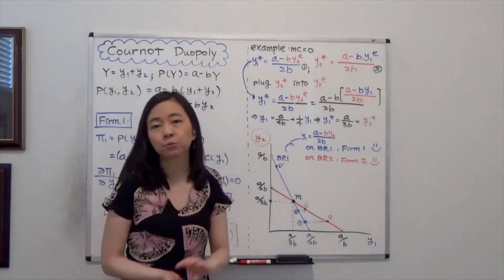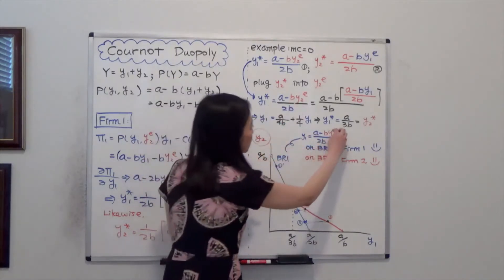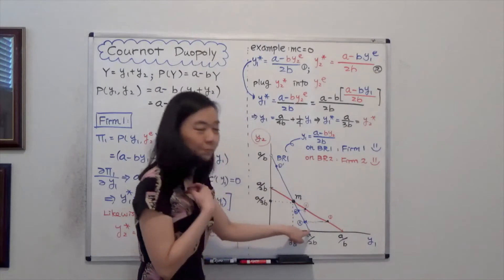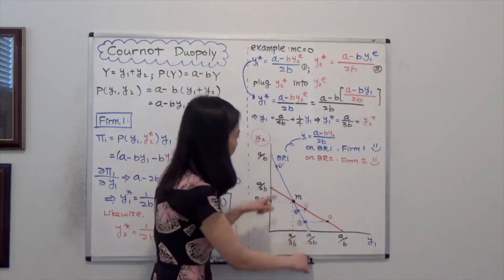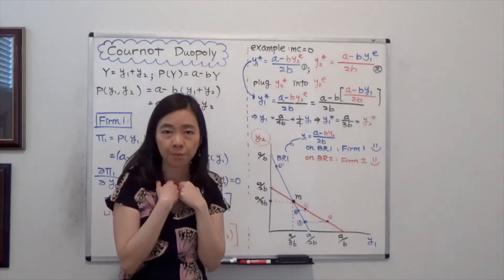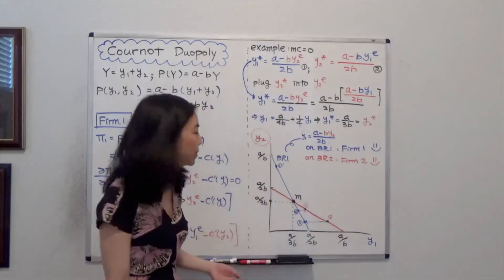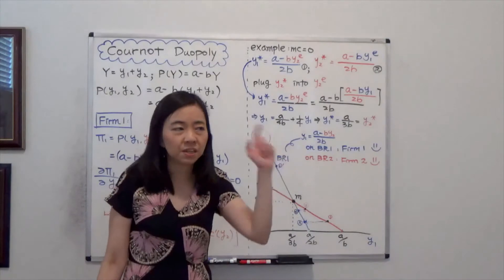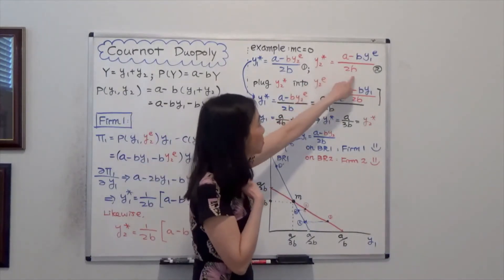Suppose we start at point 1, which is on BR2, so firm 2 is happy but firm 1 is not. Firm 1 reduces its quantity to hit point 2, its best response. Now firm 1 is happy, but firm 2 is not on the red line, so firm 2 increases its quantity to point 3. Then firm 1 is unhappy and reduces to point 4, and so on and so forth until we converge to point N, the Nash equilibrium.